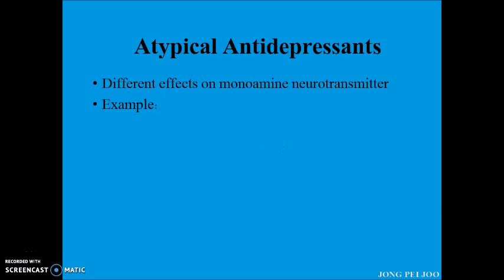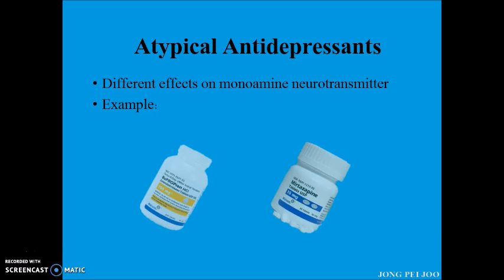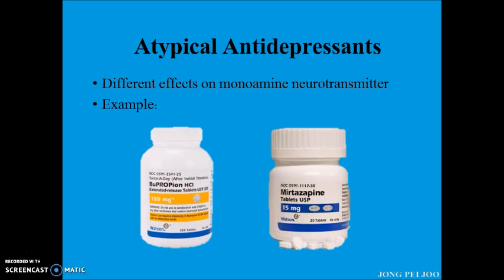Next, atypical antidepressants have actions at several different sites and different effects on monoamine neurotransmitters. For example, bupropion is a weak dopamine and norepinephrine reuptake inhibitor, whereas mirtazapine enhances serotonin and norepinephrine neurotransmission.